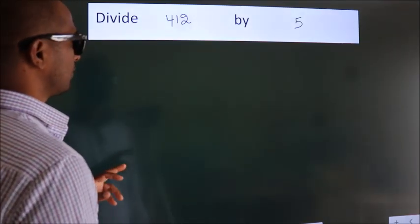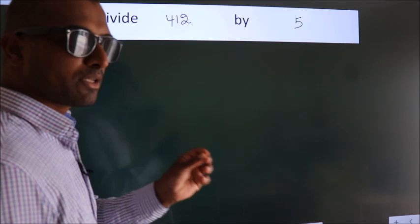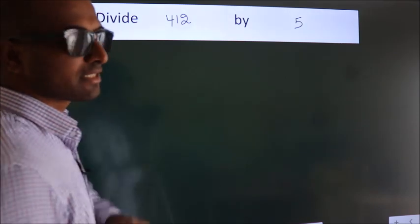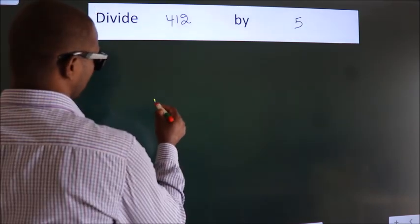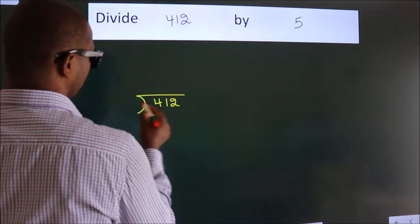Divide 412 by 5. To do this division, we should frame it in this way: 412 here, 5 here.